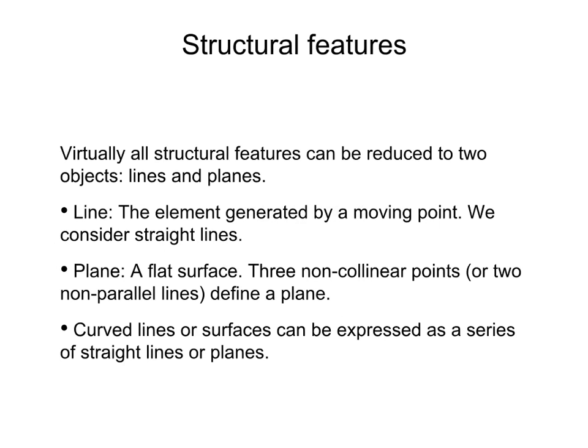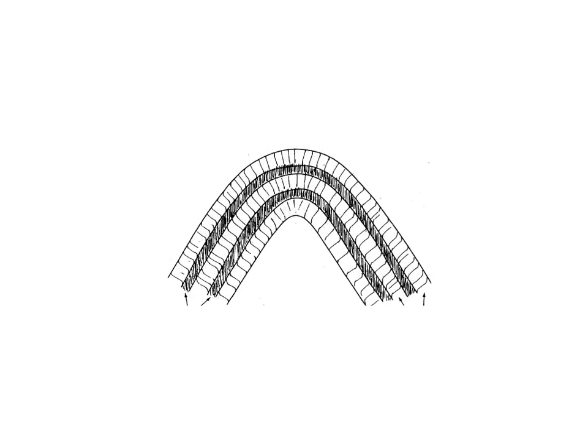A line is the element generated by a moving point. In this class, we will consider straight lines. A plane is a flat surface. Three non-collinear points or two non-parallel lines define a plane. Curved lines or surfaces can be expressed as a series of straight lines or planes. For example, a fold structure like this can be described by a collection of planes.